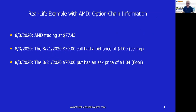Let's turn to a real-life example with AMD. The option chain information is based on data from August 3rd, 2020, when AMD was trading at $77.43. We're going to look at the August 21st expiration — an 18-day trade. We're looking at the $79 out-of-the-money call, which had a bid price of $4, establishing our ceiling at 79. Also on August 3rd, the August 21st $70 out-of-the-money put had an ask price of $1.84, establishing our floor at the 70 put strike.